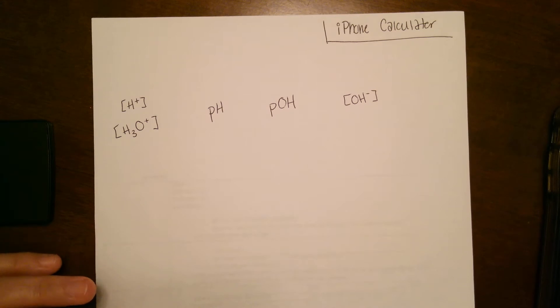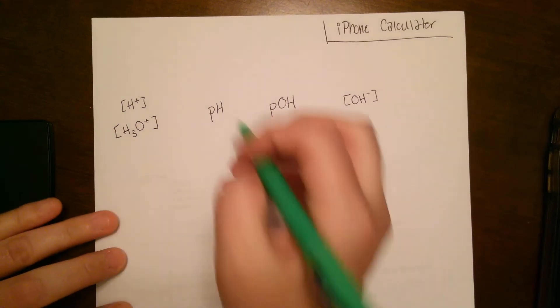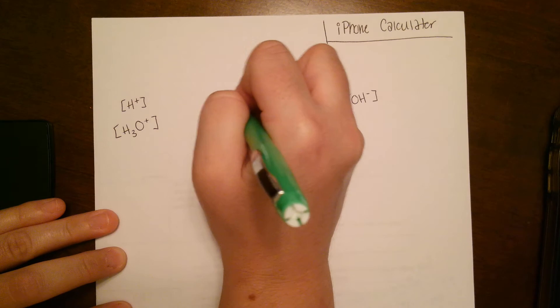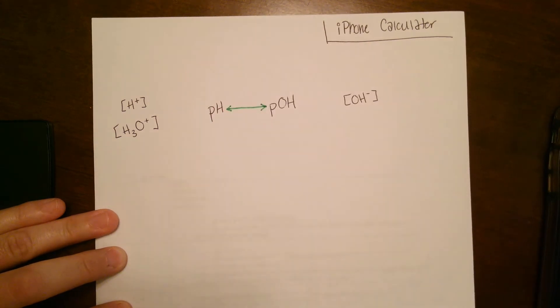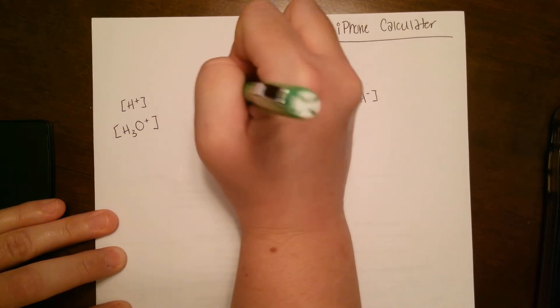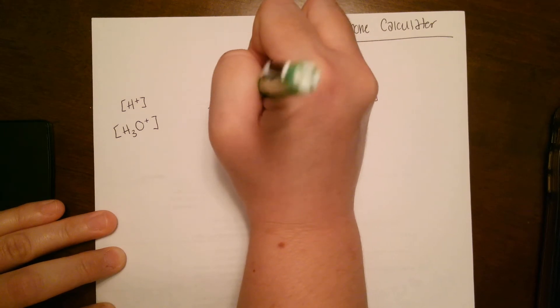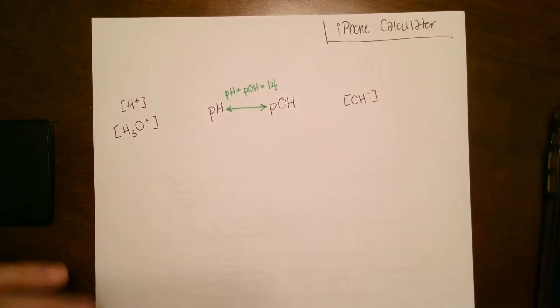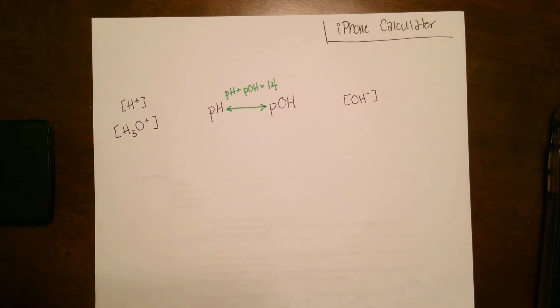So between these different variables, you're going to see that there are specific equations you're going to use to get from one to the other. The easiest one, in my opinion, is between pH and pOH. It can go either way between those two, and it's pH plus pOH equals 14.